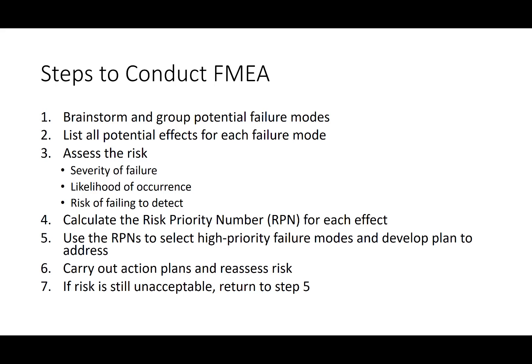From there, you assess the risk: the severity of the failure — if it does occur, how significant and severe is it? Then likelihood of occurrence — how realistic is the possibility that this could happen? And then the risk of failing to detect — how likely is it that if it's going to fail, will we catch it before it impacts our final customer? You then calculate the risk priority number for each effect and use these RPN values to select the highest priority failure modes and develop a plan to address them. At that point, you carry out those action plans, reassess risk, and continue this cycle until the risk is acceptable to move on.